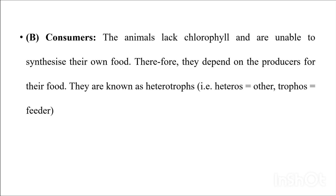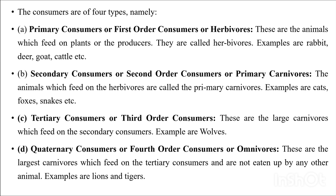Consumers are generally animals which lack chlorophyll and are unable to synthesize their own food; therefore they depend on producers for their food and are known as heterotrophs. There are four types of consumers. Primary consumers feed on plants and are known as herbivores — for example, rabbit, deer, goat, cattle. Secondary consumers feed on herbivores and are called primary carnivores — for example, cat, fox, snake. Tertiary consumers are large carnivores feeding on secondary consumers — for example, wolves.